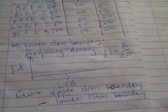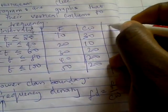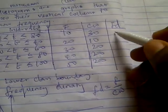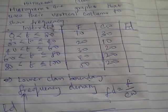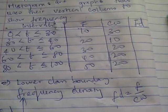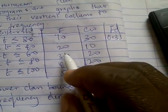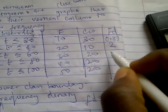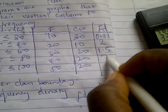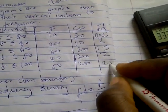Now frequency density equals frequency divided by class width. If our frequencies are 10, 20, 30, 40, 50, then: 10 divided by 30 is 0.33; 20 divided by 10 is 2; 30 divided by 20 is 1.5; 40 divided by 20 is 2; and 50 divided by 20 is 2.5. These are the frequency densities.